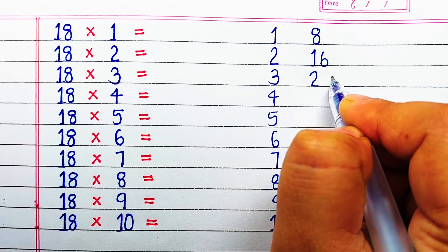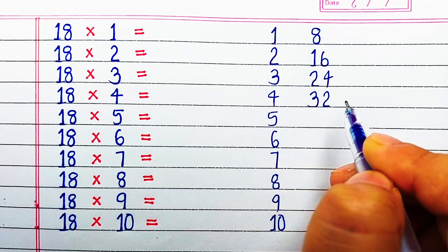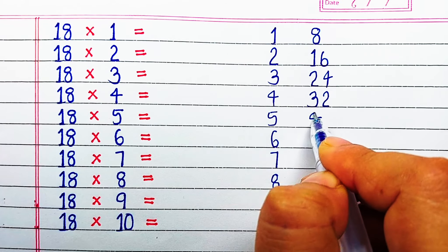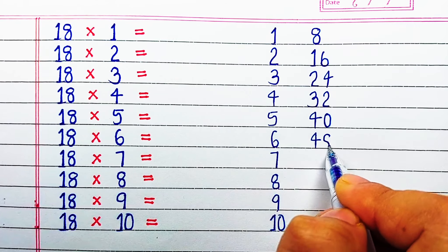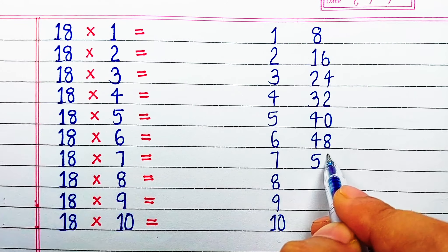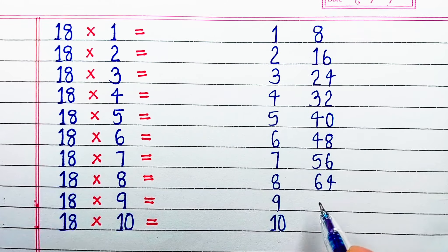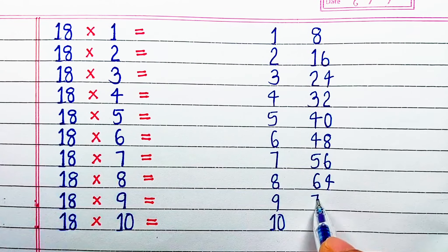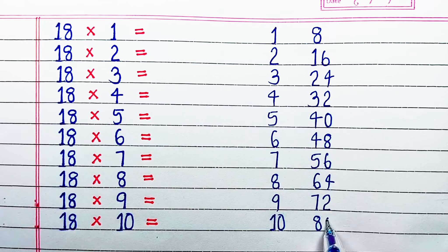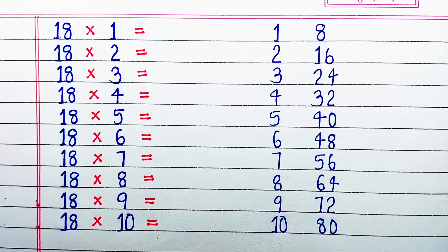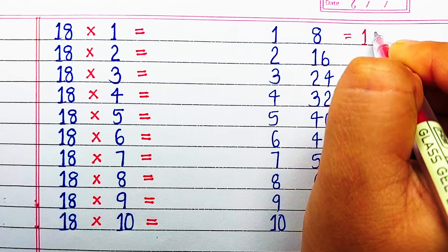Table of 8: 8×1=8, 8×2=16, 8×3=24, 8×4=32, 8×5=40, 8×6=48, 8×7=56, 8×8=64, 8×9=72, 8×10=80. Now we will combine both the numbers like we have done previously.